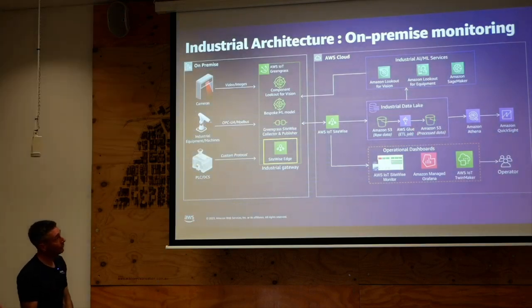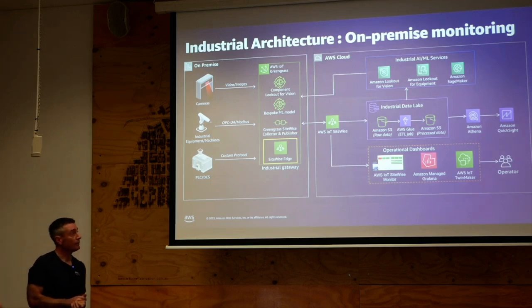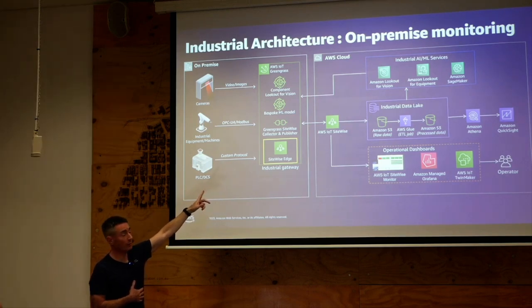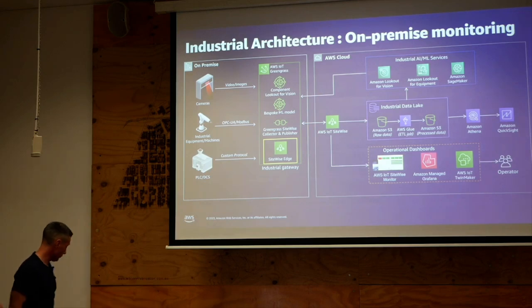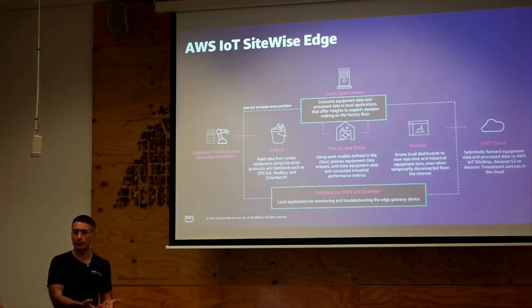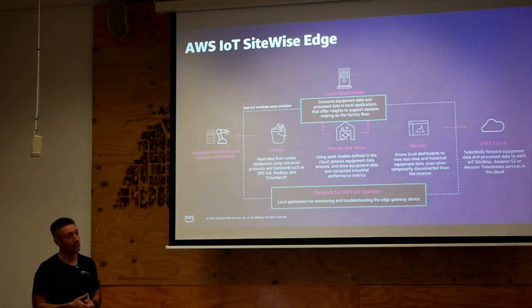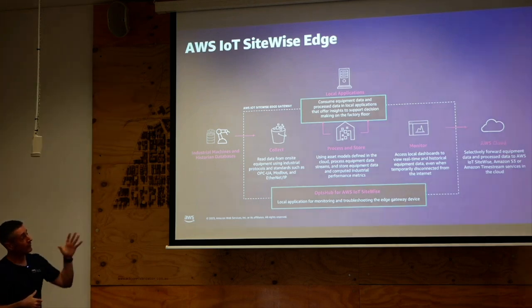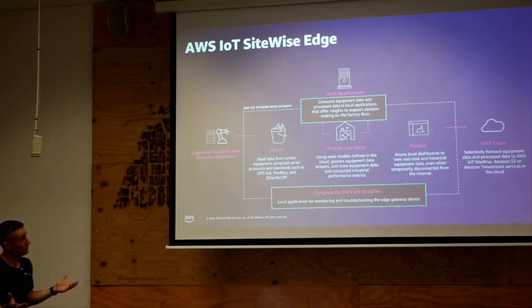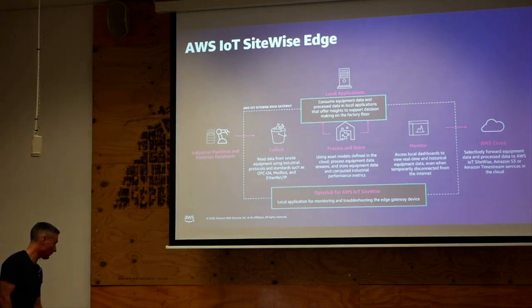SiteWise Edge is another service in the SiteWise collection — essentially pre-built components supported by AWS that you can deploy to Greengrass for on-premise monitoring. With SiteWise Edge, you can collect, process, store, and monitor at the edge. You might choose not to send all data to the cloud — maybe there's not enough bandwidth, or no value in sending everything. You can use SiteWise Edge to deliver dashboards on-site so operations continue even if your cloud connection goes down. And because it's just more Greengrass components, it's relatively easy to deploy to existing Greengrass devices.